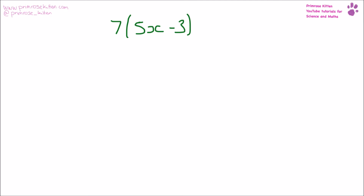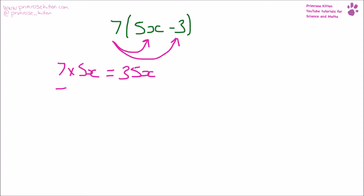When we're multiplying our brackets, we have to make sure what is outside is times by each of the things inside. So we need to do 7 times 5x, that is going to give us 35x. Then we need to do 7 times minus 3, that is going to give us minus 21. So overall our answer is 35x minus 21.